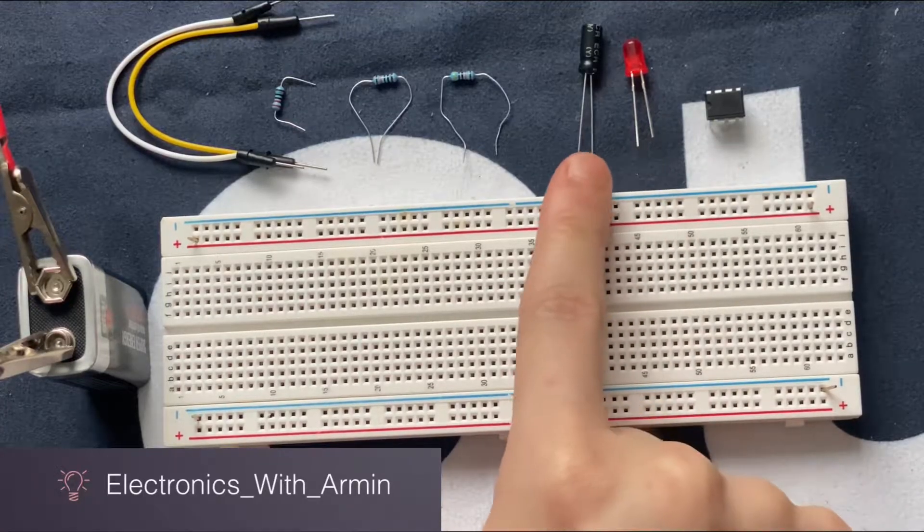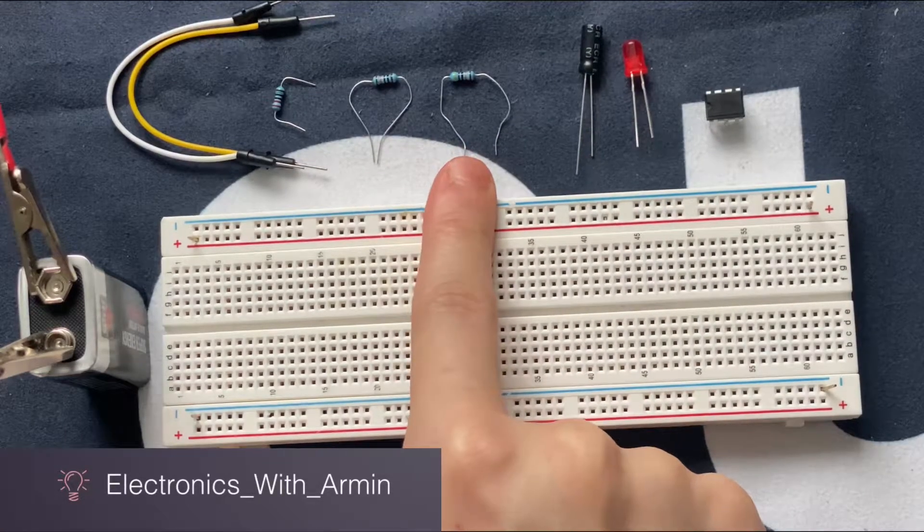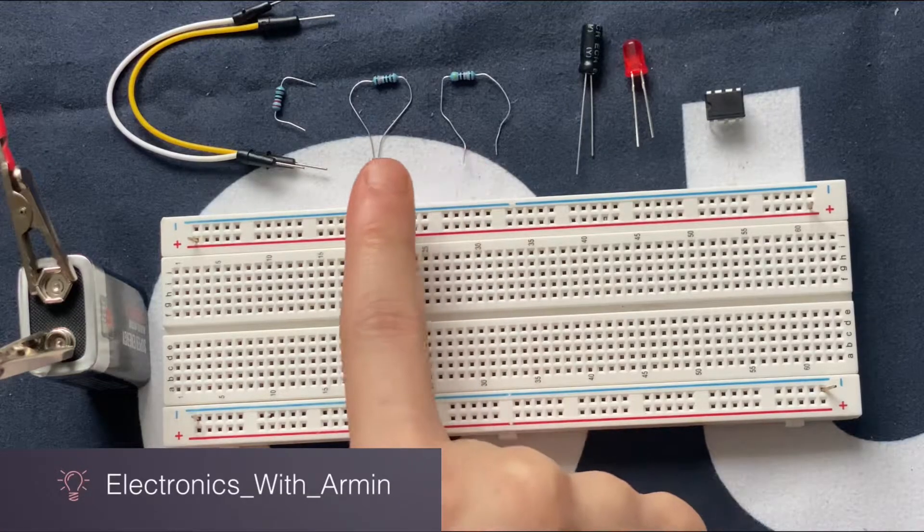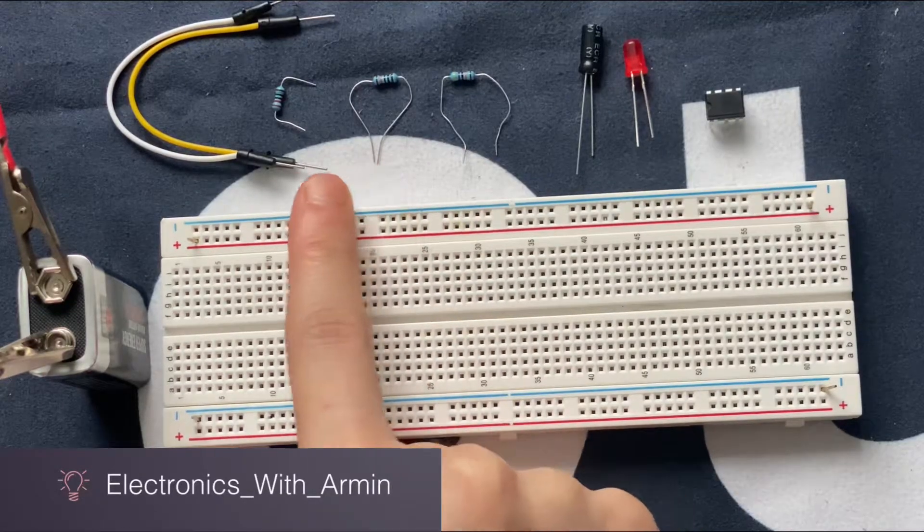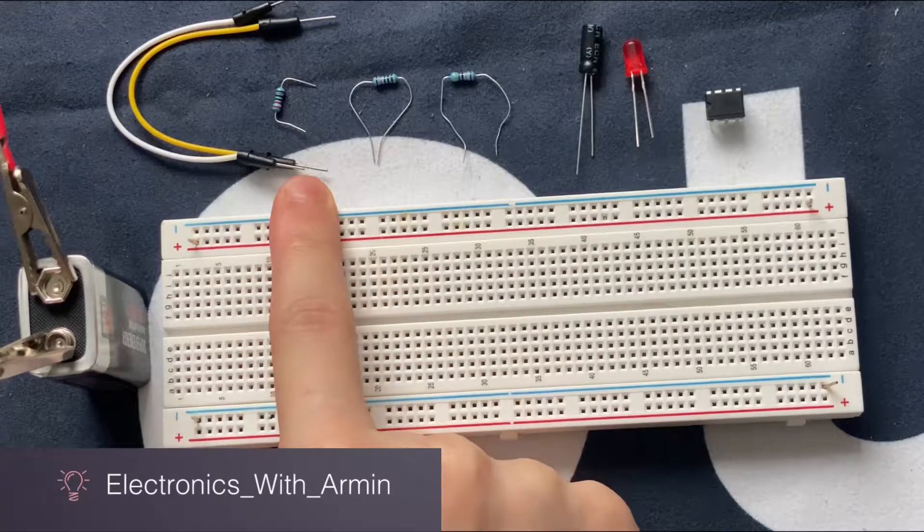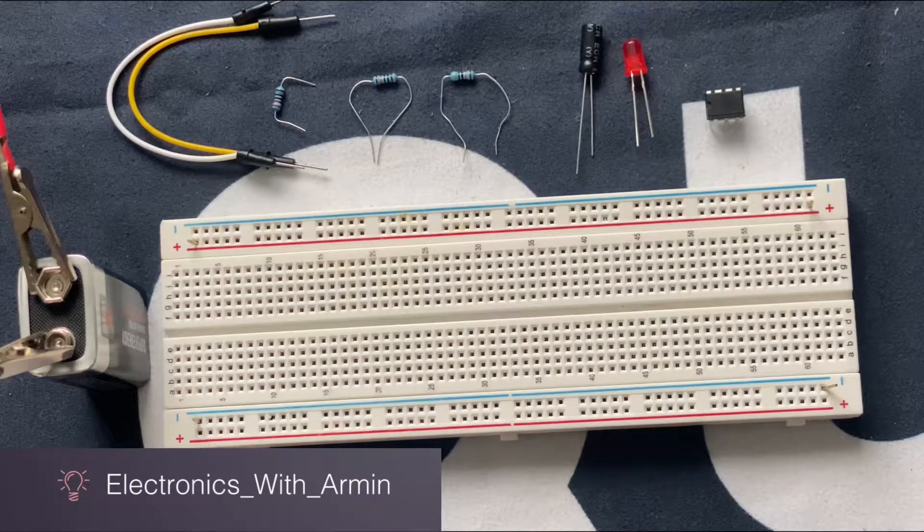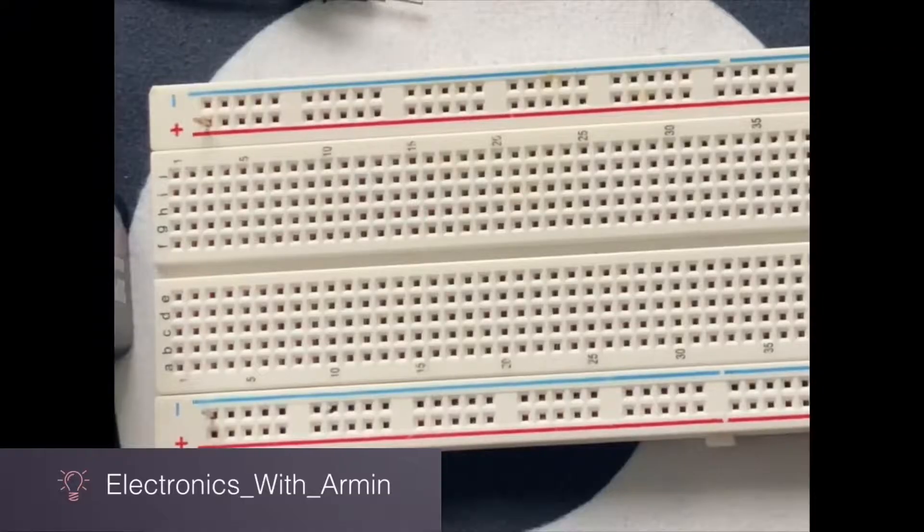We also need an LED, one microfarad capacitor, 470 kilohm resistor, 100 kilohm resistor, 220 ohm resistor, two jumper wires, and a nine volt battery. First of all, I'm going to connect the IC to the breadboard.